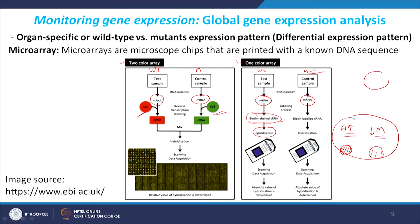In the two-color method, if the expression level of gene A is the same in wild type and mutant, we expect equal amounts of Cy5 and Cy3 cRNA to hybridize with the probe — resulting in a yellow signal. But if expression differs, for example if expression is more in wild type, you expect more red signal than green, and the spot color will shift towards red. If the gene is down-regulated, it will shift more towards green. Based on this color and quantification, you can calculate the fold change between wild type and mutant for all genes.